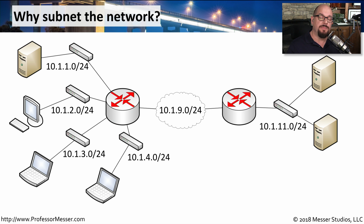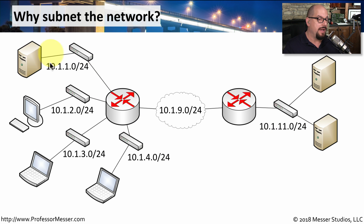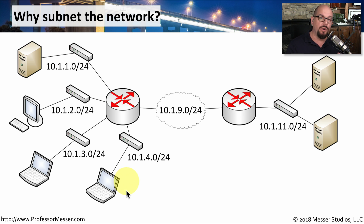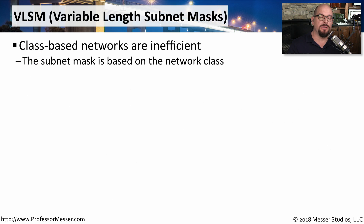Having these separate subnets also provides some segmentation and perhaps the ability to add additional security. We could add a firewall and segment out a particular IP subnet that had servers, and that might have a different security posture than an IP subnet that had workstations or printers on it.